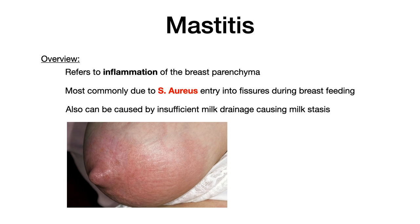Let's jump right in. We're going to start by talking about mastitis. Mastitis refers to inflammation of the breast parenchyma. Anytime you see -itis, it's referring to inflammation — swelling, redness, et cetera. This is most commonly due to Staph aureus. A young mother will be breastfeeding and with repeated breastfeeding, you get the formation of little fissures on the breast. Those fissures are cracks in the skin and they give the Staph aureus a route of entry into the breast, causing localized infection — hence the name acute mastitis.